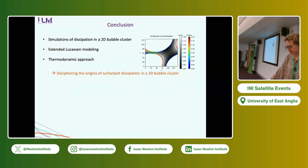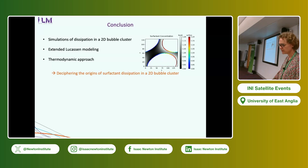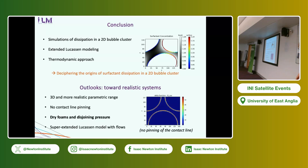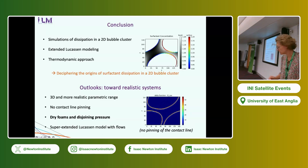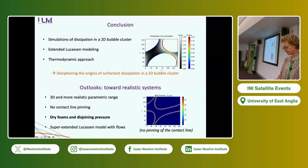As a conclusion, we performed simulations of dissipation in a 2D bubble cluster, extended Lucassen modeling as a linearized analytical approach, and used a thermodynamic framework to compare both. We were able to decipher the origin of surfactant dissipation — whether it comes from exchange or diffusion — depending on the system properties. As outlook, we would like to go to 3D, more realistic parametric ranges, remove contact line pinning, move to dry foam with disjoining pressure between interfaces, and extend models to include viscous dissipation.